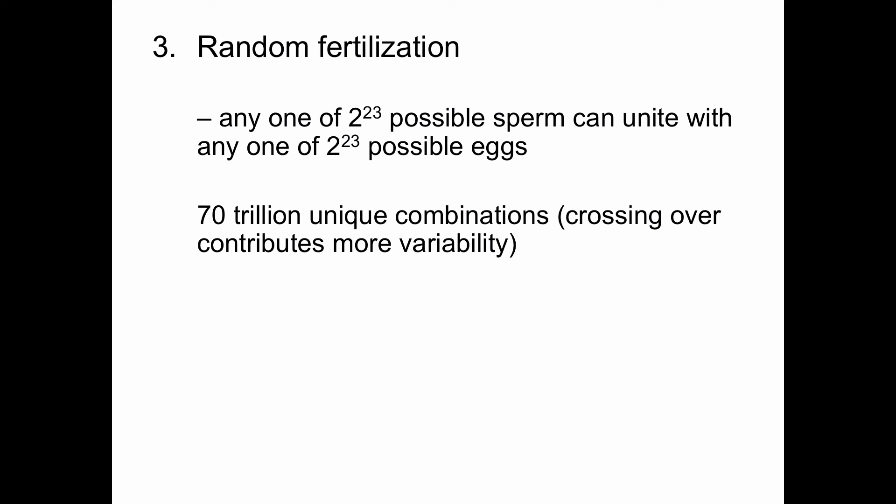So we have three things that increase variability: crossing over, which happens in prophase one of meiosis one; independent assortment, which happens in metaphase one of meiosis one; and third, random fertilization.